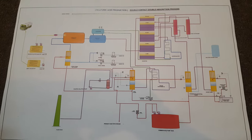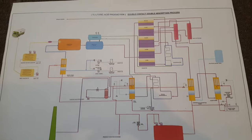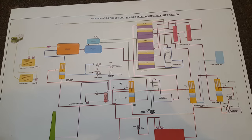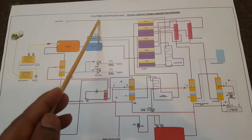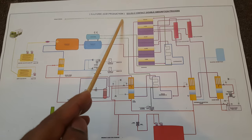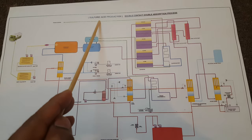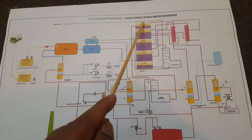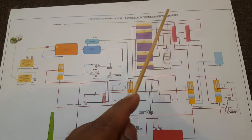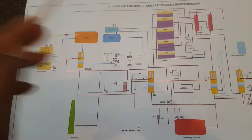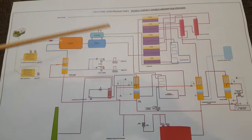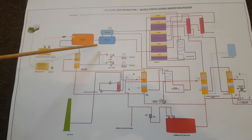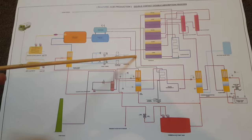Hello guys, good morning, welcome to my channel Chemical Dairy. Today I came up with an idea to explain you about the production of sulfuric acid — how sulfuric acid is manufactured industrially. I'm going to explain you by the DCDA, double contact double absorption process. It is easier for understanding; I will explain you the overview and equipment functions.